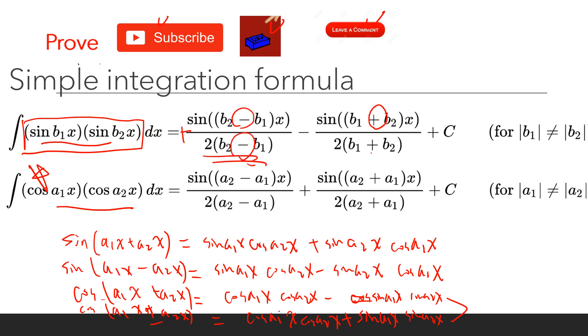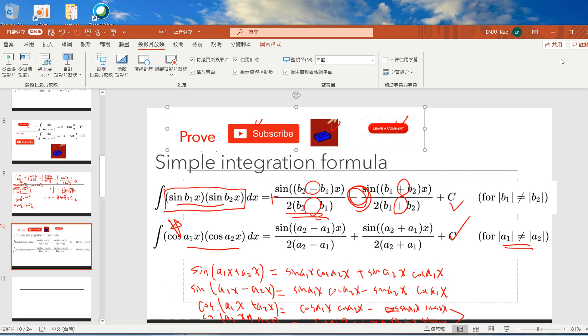Obviously a1 cannot equal a2, otherwise one of the denominators will be zero. That's it for this video, I will see you guys in the next video, thanks.